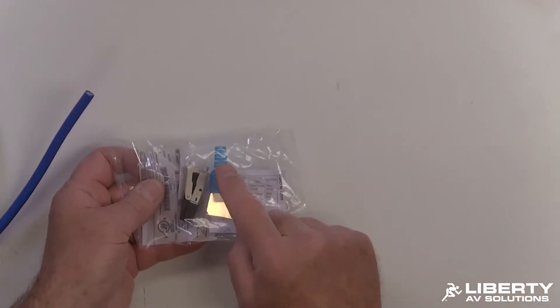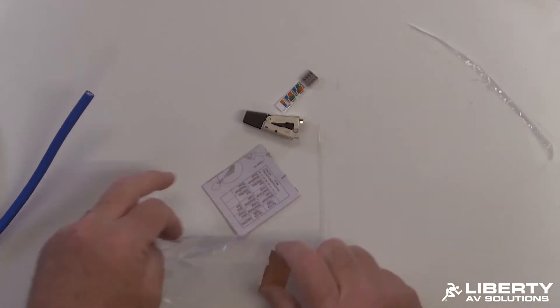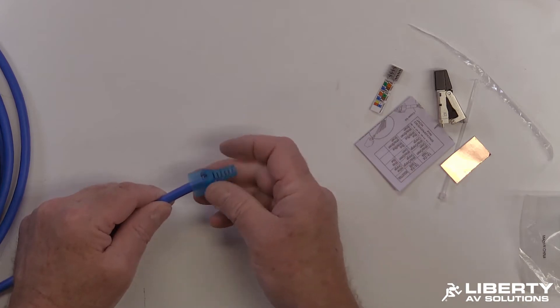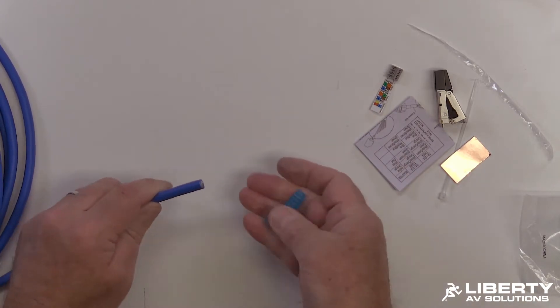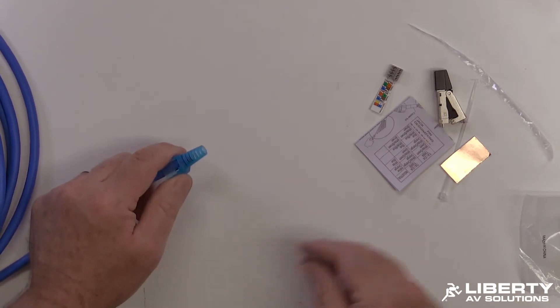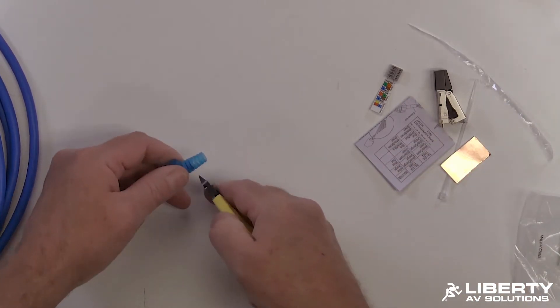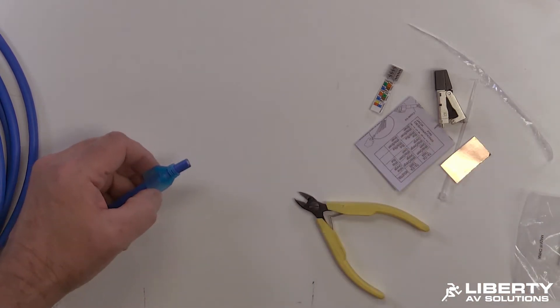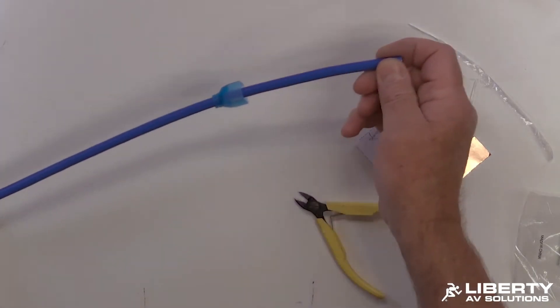First step is going to be to size your boot to the cable. The way you do that is you slide the boot up the cable backwards, first make sure it's nice and round, slide it up backwards till it stops. And where it stops, we have these little cross members here on this boot. I'm going to go ahead, pop those off, then I'll flip the boot back around and slide it up the cable. So boot is sized to the cable.